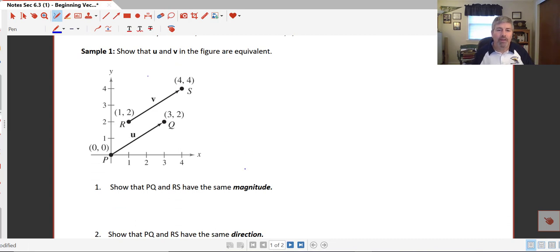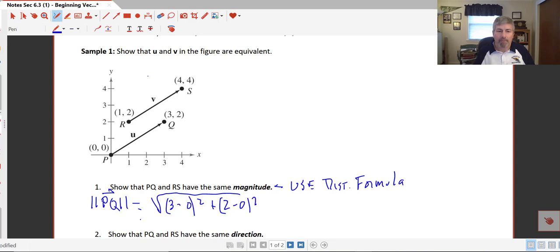So how do we show that they have the same magnitude? Well, we're going to do that by using the distance formula. And we'll find out essentially how long the vectors are. So the magnitude of vector U or PQ, we would write with the double absolute value, the magnitude of vector PQ, is equal to, using our distance formula, the distance from 3 to 0, our change in X. So 3 minus 0 squared plus 2 minus 0 squared equals the square root of 9 plus 4, or the square root of 13.